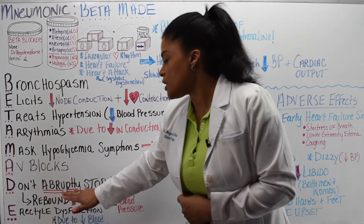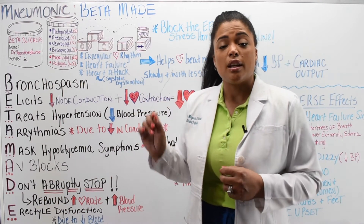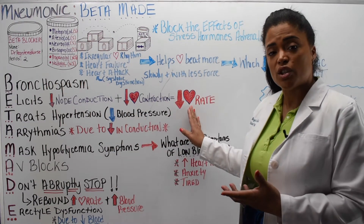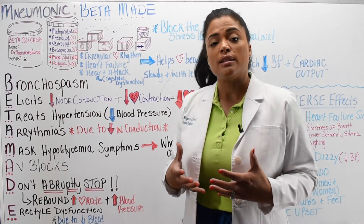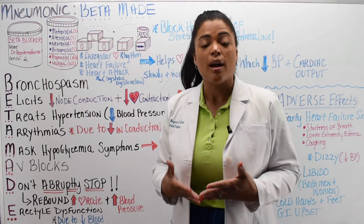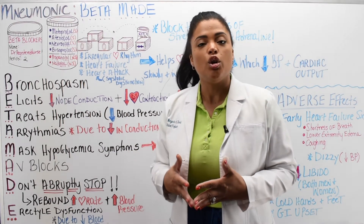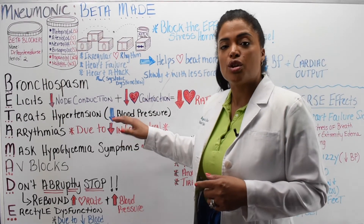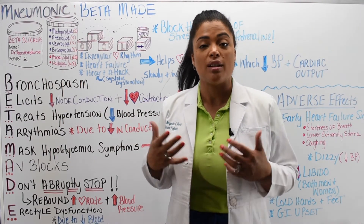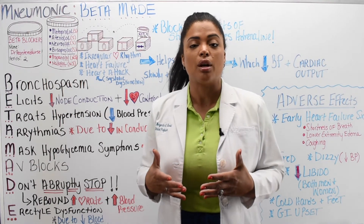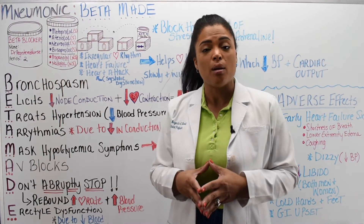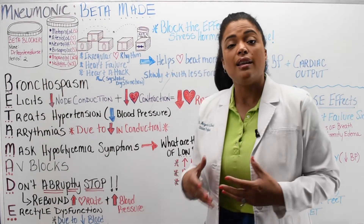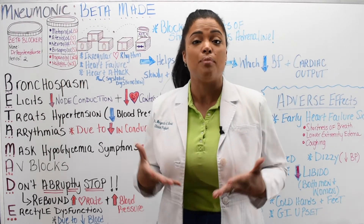D is for don't abruptly stop. This medication should not be abruptly stopped because it affects heart rate and blood pressure. If you stop it abruptly instead of tapering it down according to your healthcare provider's prescription, you will have a rebound effect — rebound tachycardia and rebound high blood pressure instead of the decreased heart rate and blood pressure the medication was providing. Never abruptly stop a beta blocker; you need to taper it down. E is for erectile dysfunction, due to the decreased blood flow that occurs when somebody takes a beta blocker.